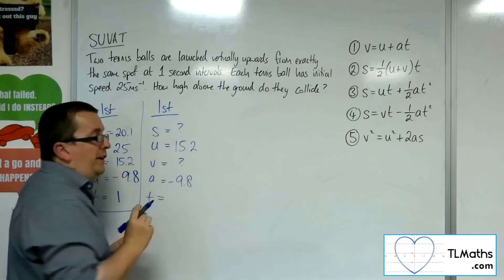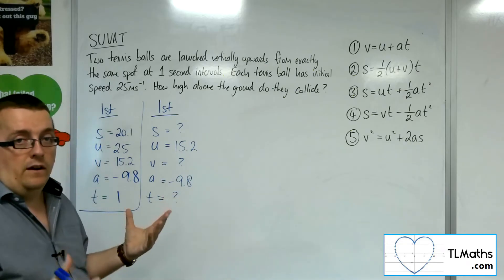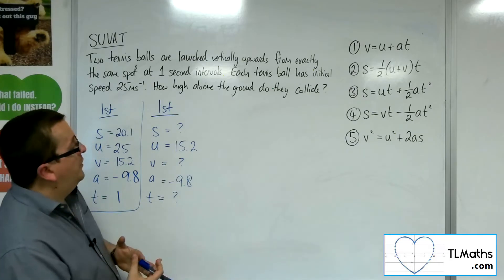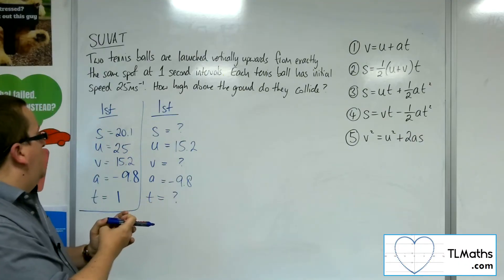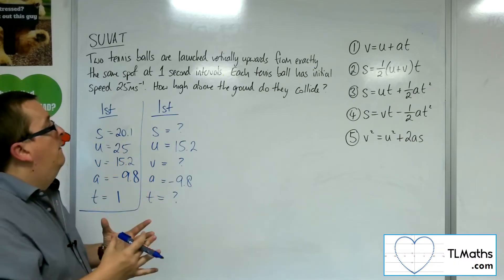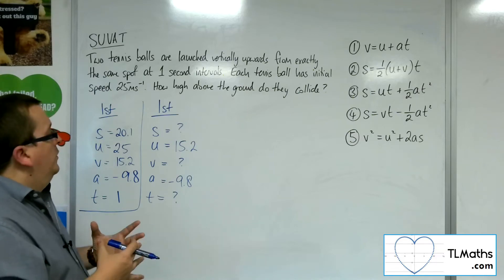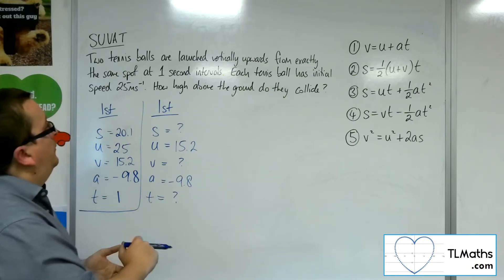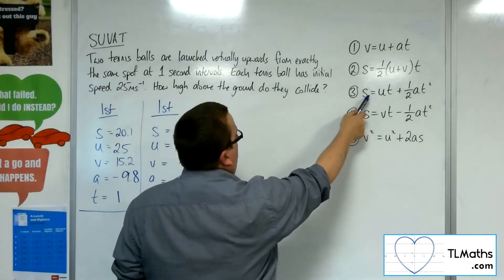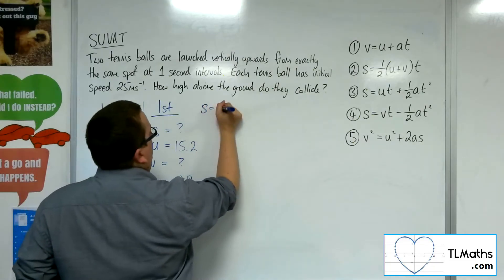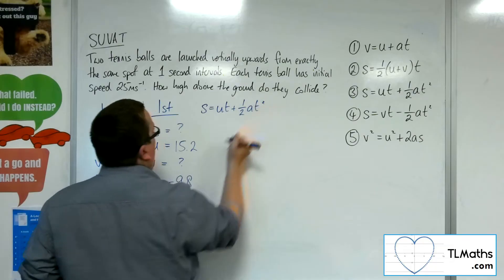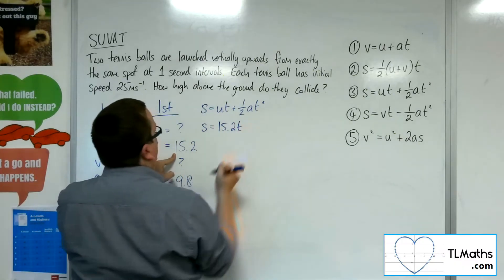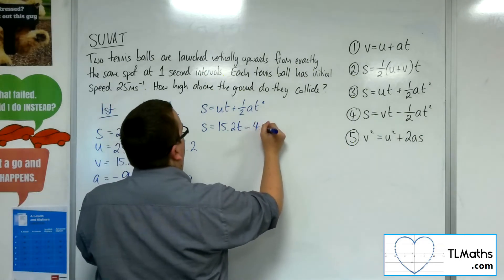I don't know what the displacement's going to be when it hits, and I don't know the time when they hit either. So I don't really know an awful lot. However, what can I build from that? Because I want a displacement equation that incorporates the fact that it's starting from 20.1 metres higher than the other particle. So I want an S that has the U and the A in it, but doesn't have the V. So the S that I'm going to use here is that number 3.